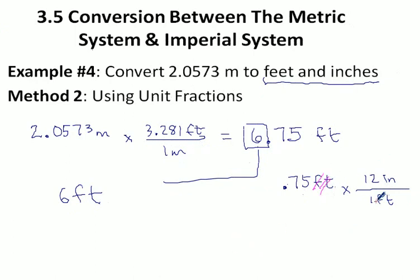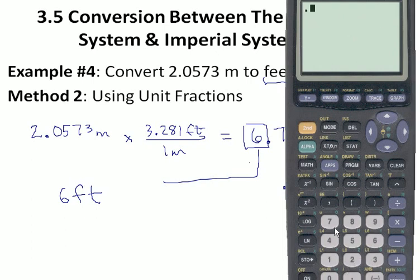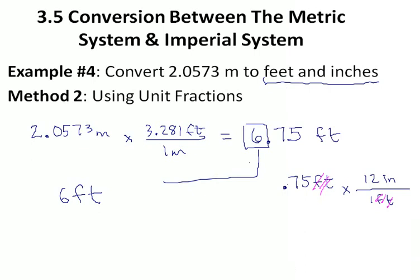When you multiply those, your feet are going to cancel, just like they're supposed to, and we'll get a number in inches. 0.75 times 12. It makes 9. We have 9 inches.